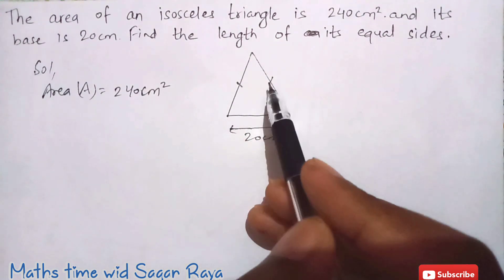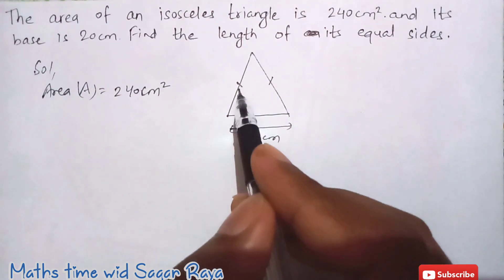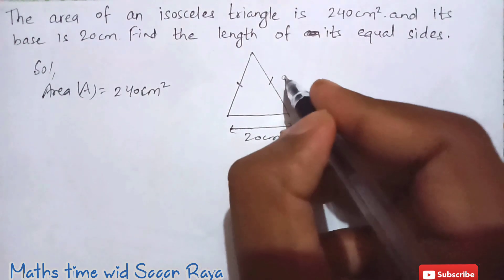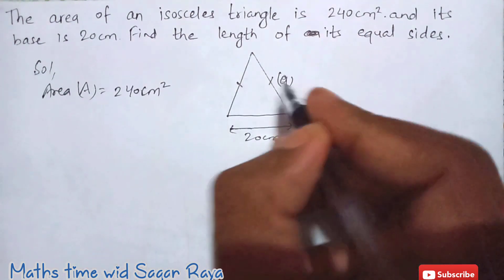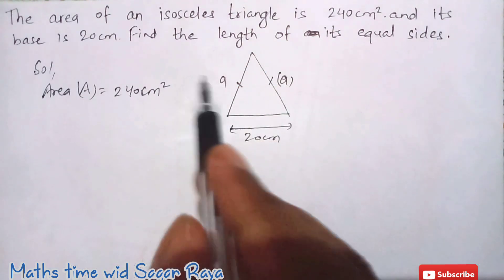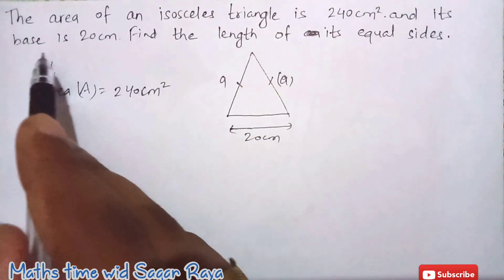So I have just made one isosceles triangle where these two sides are equal. So I am just supposing these two equal sides as a. So if it is a, this one will also be a.